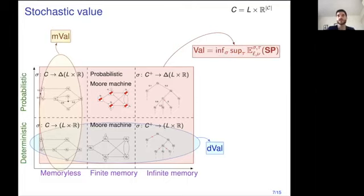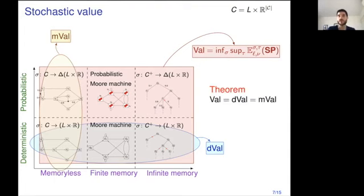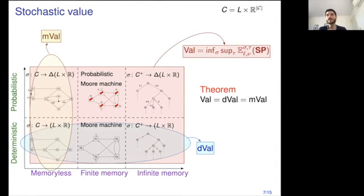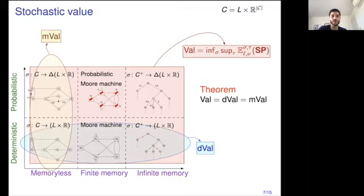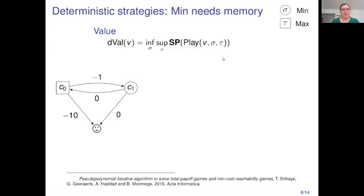But first, let me give you the contribution we present in this paper: the three values — stochastic, memoryless, and deterministic — are all equal. So probabilities can emulate memory, and vice versa. I will now let Julie Parot explain why deterministic memoryless strategies are not enough, and give a hint on the proof of this theorem.